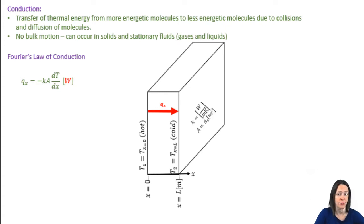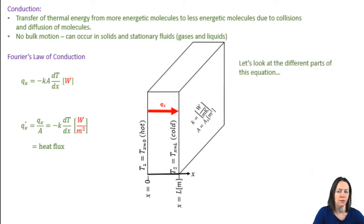Now, this wall has a certain thermal conductivity and a cross-sectional area through which the heat transfer vector flows perpendicularly. I could also define Fourier's law in terms of conductive heat flux, which would be q divided by the area a. Now, let's look at the different parts of this equation.